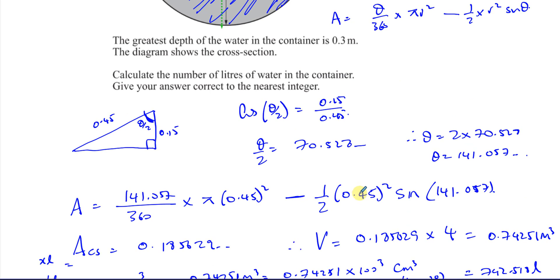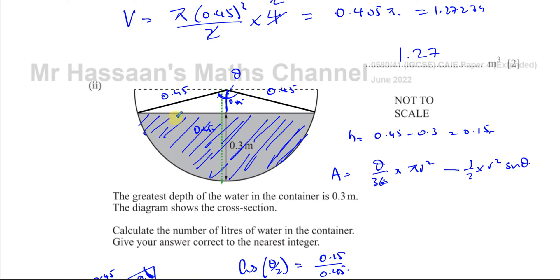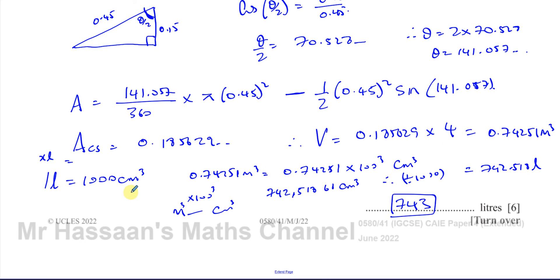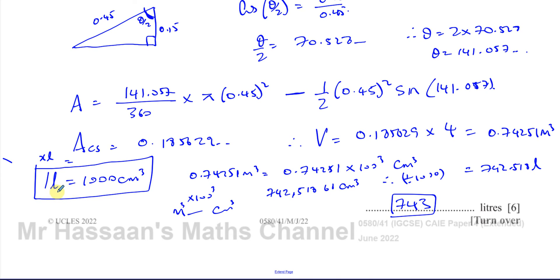So there are a few key steps in this question: finding the area of the segment (sector area minus triangle area), and converting from meters cubed to liters. I remember the conversion from centimeters cubed to liters rather than memorizing the direct meters cubed to liters conversion — it's better to memorize the minimum necessary and know how to convert.